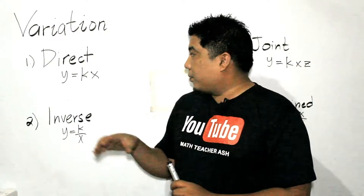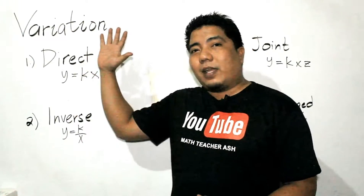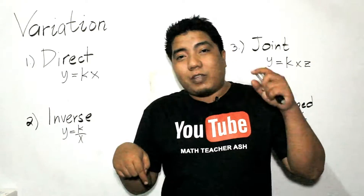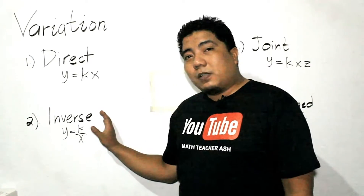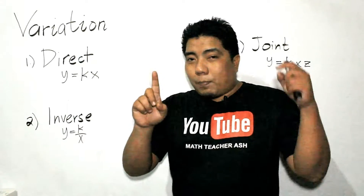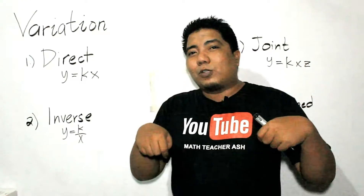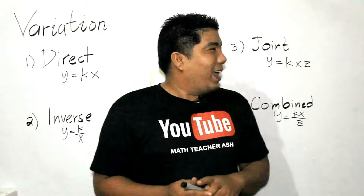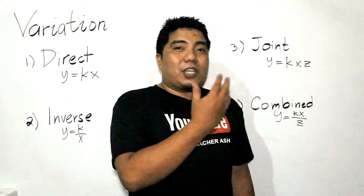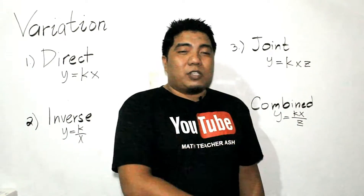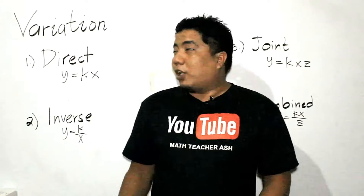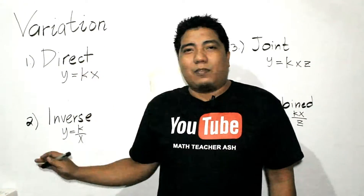To summarize: in a direct relationship with two variables, one goes up, the other goes up; one goes down, the other goes down. In an inverse relationship, one goes up, the other goes down. Joint variation is direct but considering three or more variables. And combined variation is the combination of direct and inverse.